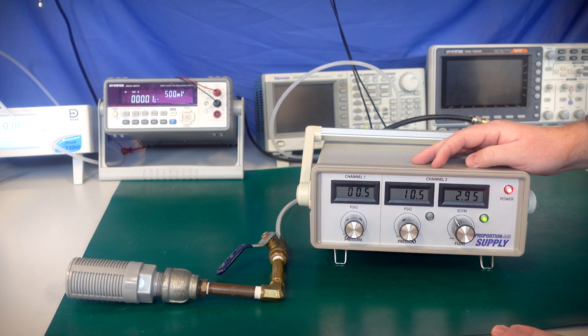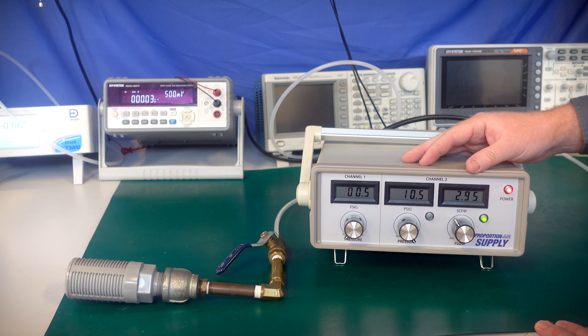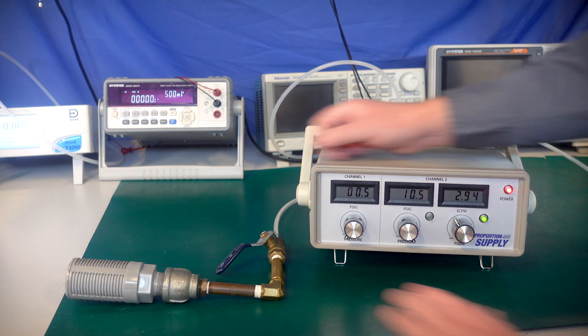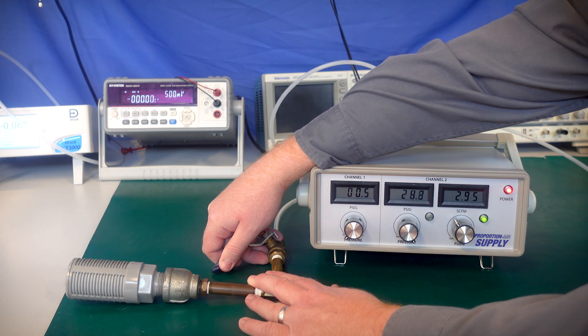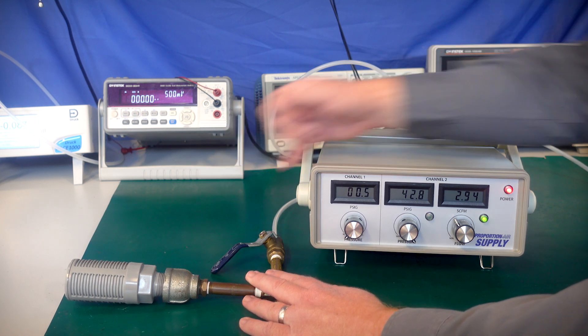So you can see here with the ball valve closed about 50%, in order to keep the almost 3 SCFM, you now had to jump up to 10 psi. If you close more, it will keep going up to 40 psi, up until the max of your tubing going into the unit.